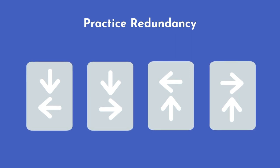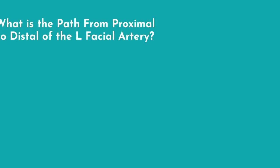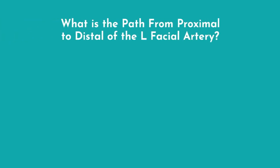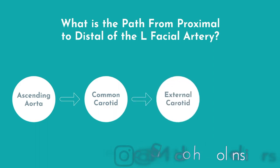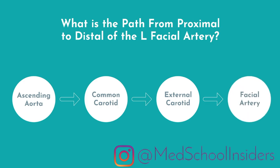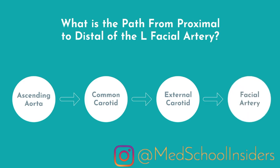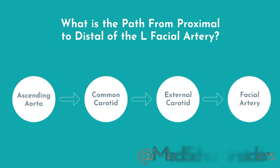Let's go back to the branches of the external carotid artery. Rather than just reciting the branches in order, you can test yourself on a single artery and trace the path from the heart. For example, you could trace the path of the left facial artery — going from the ascending aorta, to the common carotid, to the external carotid, to then the facial artery.